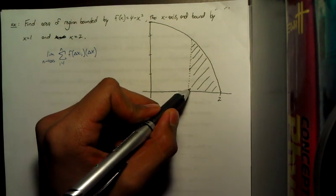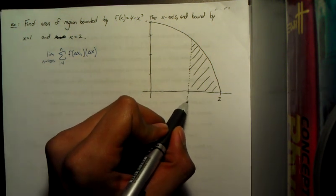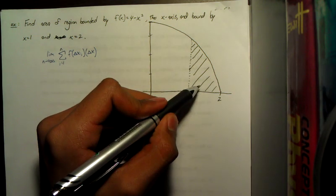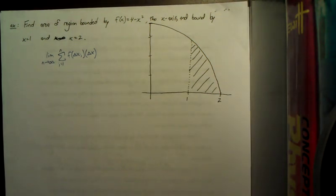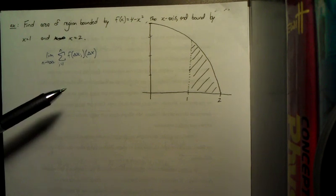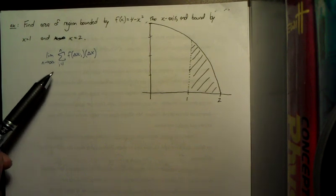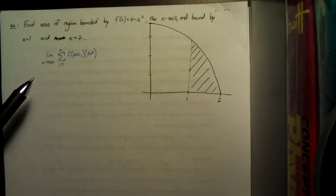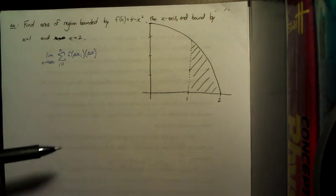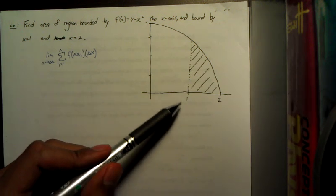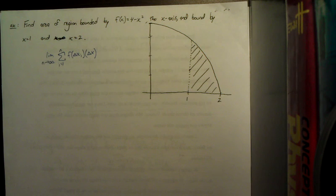So what we'll be finding the area of is from 1 to 2 and it's all going to be above the x-axis. So in this case, the integral is going to be representative of the area as well because we're not going to have any negative values that we have to take into account.